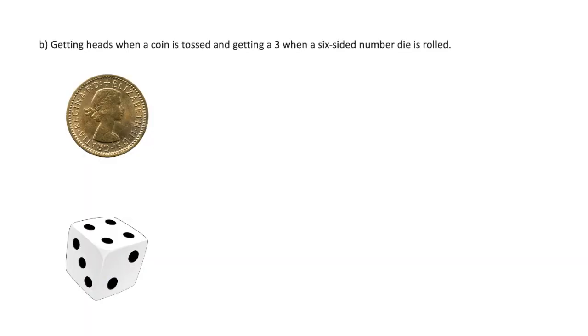Let's consider getting heads when a coin is tossed and getting a 3 when a six-sided number die is rolled. Again we are going to ask ourselves, can it happen in more than one way?